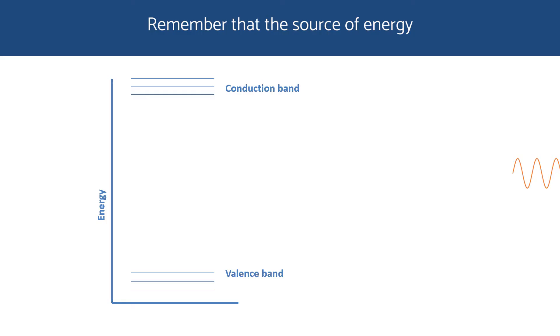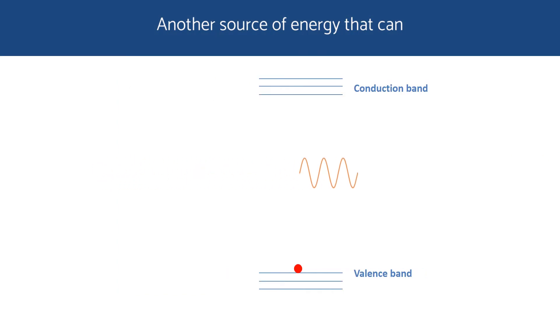Remember that the source of energy that excites electrons from the valence band to the conduction band is an electric voltage. Another source of energy that can excite an electron is a photon of light. If a photon happens to pass through the material, it can excite an electron by transferring all of its energy to the electron. In this case, the photon energy is absorbed by the electron, resulting in the annihilation of the photon.